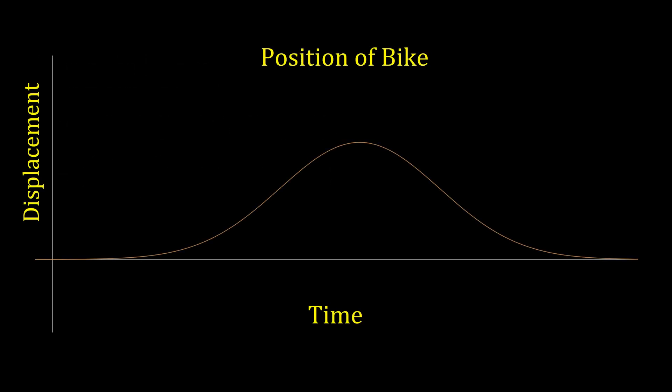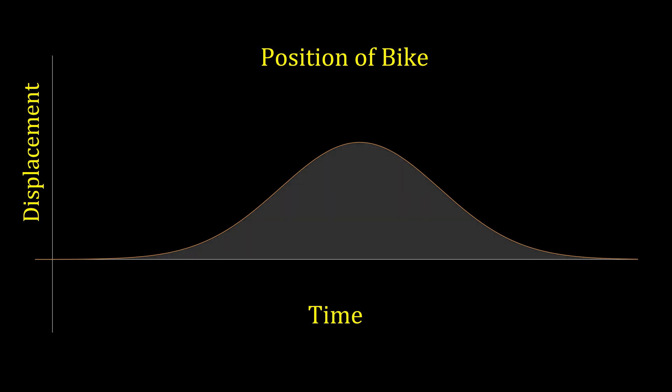If we took our velocity function of the bike from earlier and found the area under the curve, we'd also find the value for the total distance that was travelled.